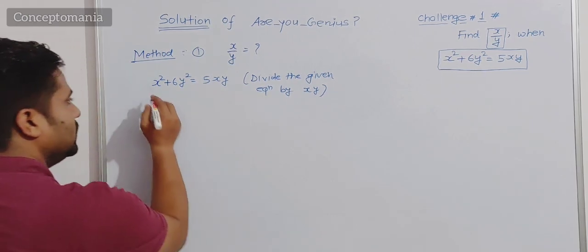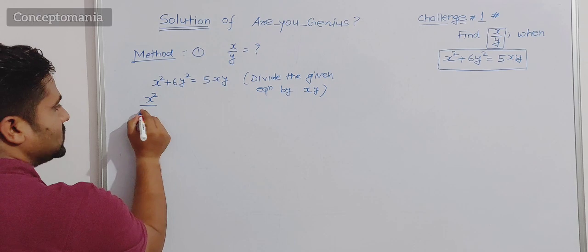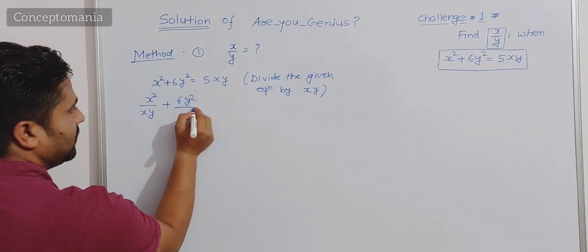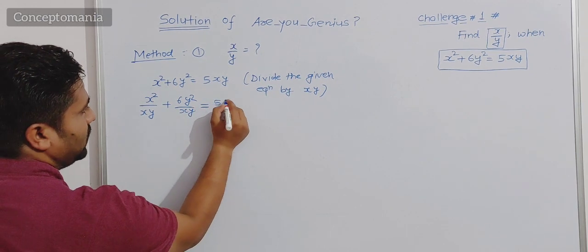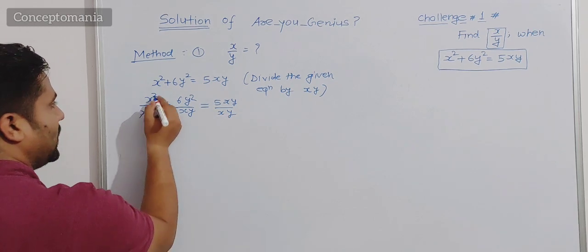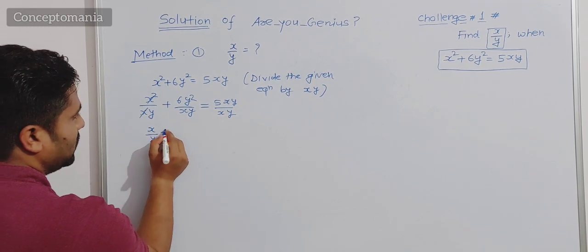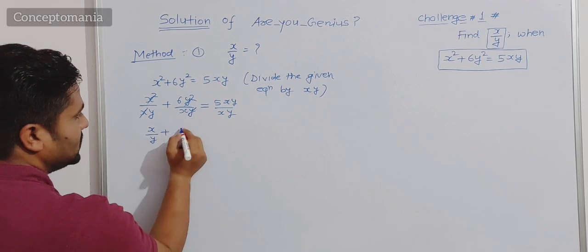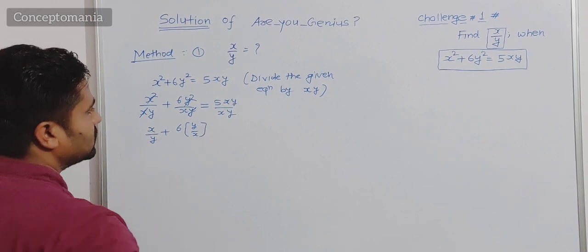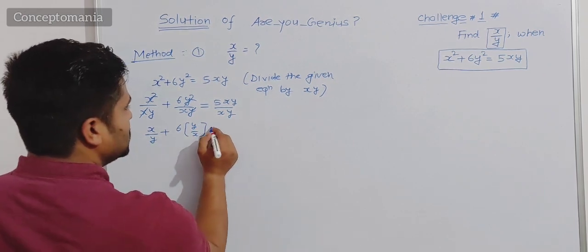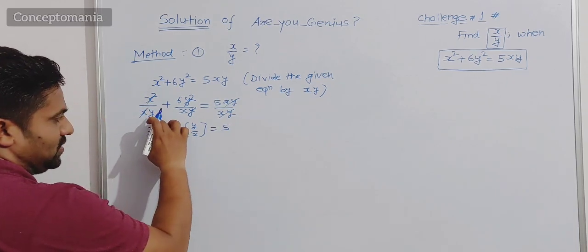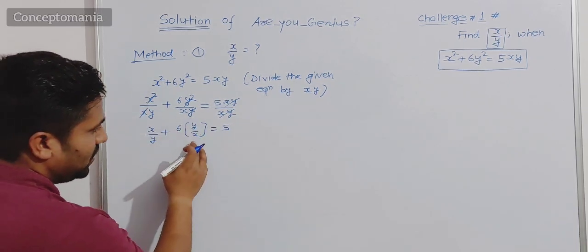Dividing the given equation by xy: x square upon xy, plus 6y square upon xy, is equal to 5xy upon xy. x cancels with x, leaving x upon y. y cancels, leaving 6 into y upon x. And 5xy divided by xy gives 5. So we get x upon y plus 6 into y upon x equals 5.